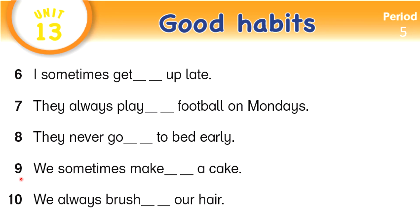Number nine: we sometimes make a cake. We don't add anything to the verb because the subject is we. Number ten: we always brush our hair. We don't add anything to the verb because the subject is we.